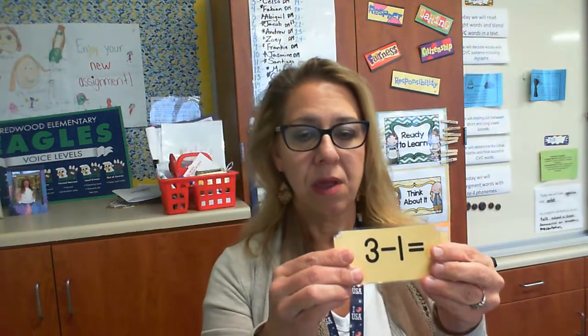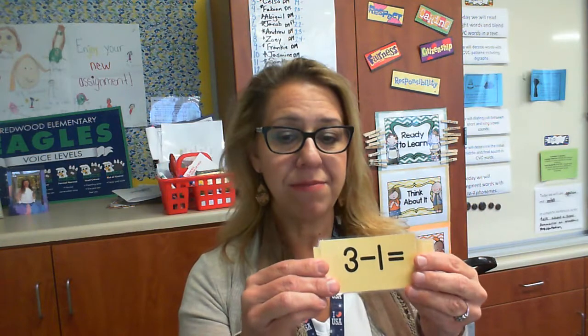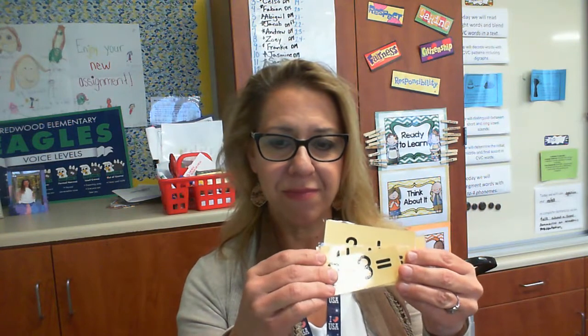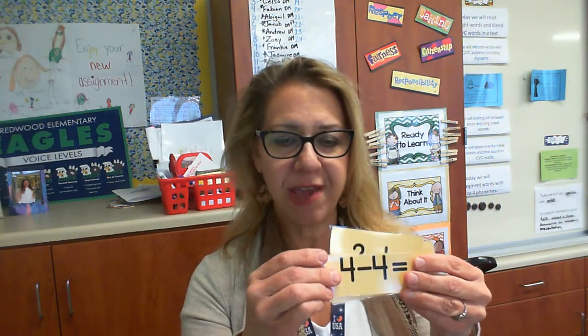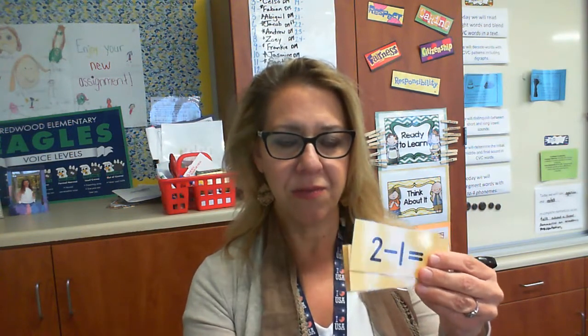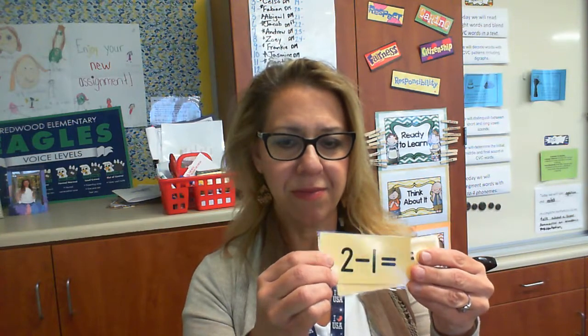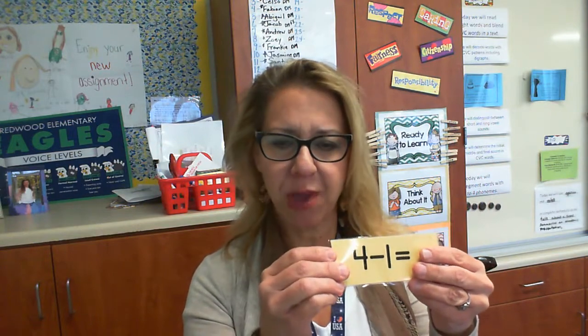All right, let's try those, mixing them up. Backwards. Three minus one — two. Five minus five, all goes away — zero. Three take away three — zero. Four take away four — zero. Two take away one — one. Five take away one — four. Four take away one — three. One, take it all away — zero.